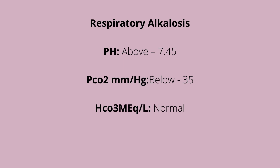A helpful way to remember this is that respiratory values are opposite and metabolic values are equal. For metabolic acidosis, pH is low and bicarb is low. For metabolic alkalosis, pH is high and bicarb is high. For respiratory acidosis, pH is low and CO2 is high. For respiratory alkalosis, pH is high and PCO2 is low.